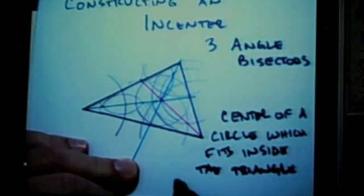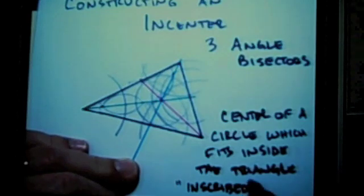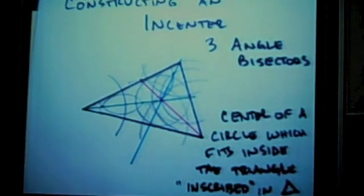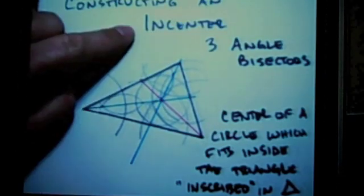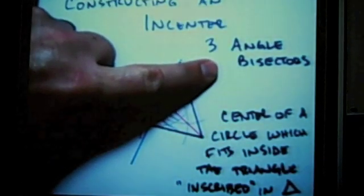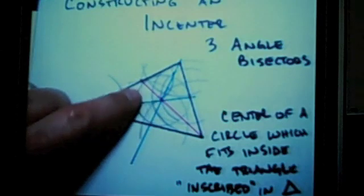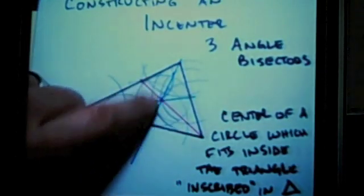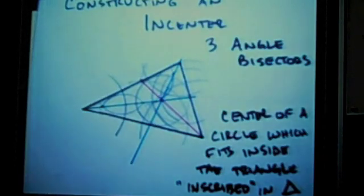In other words, it inscribes, or it is inscribed in a triangle. The in-center results from three angle bisectors, and it produces a center point which allows you to construct a circle that's exactly the same distance from each side. That concludes constructing an in-center.